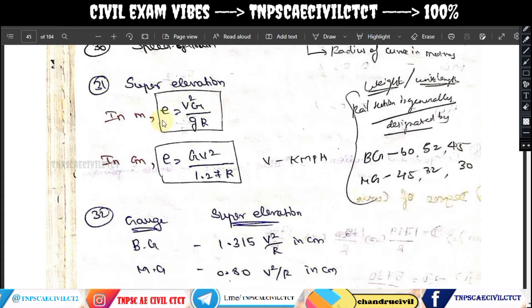Next important topic: super elevation. Super elevation E is expressed in meters and centimeters. The formula is E equals v² multiplied by G, divided by g into R, where capital G is the gauge distance, v is velocity in kilometers per hour, and R is the radius of the curve.